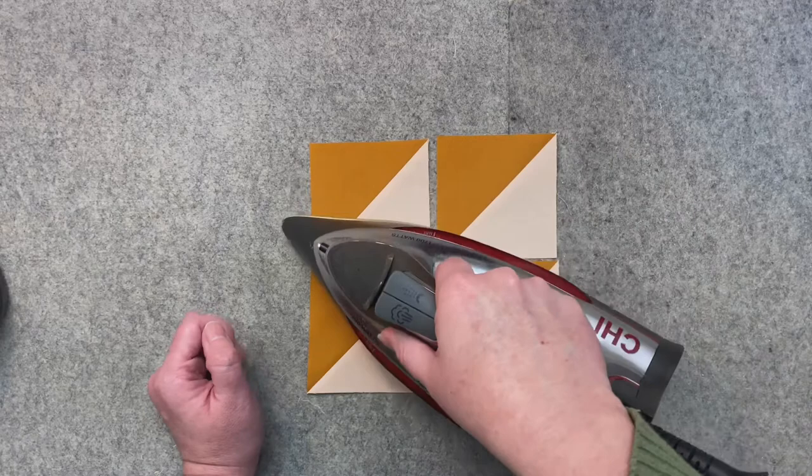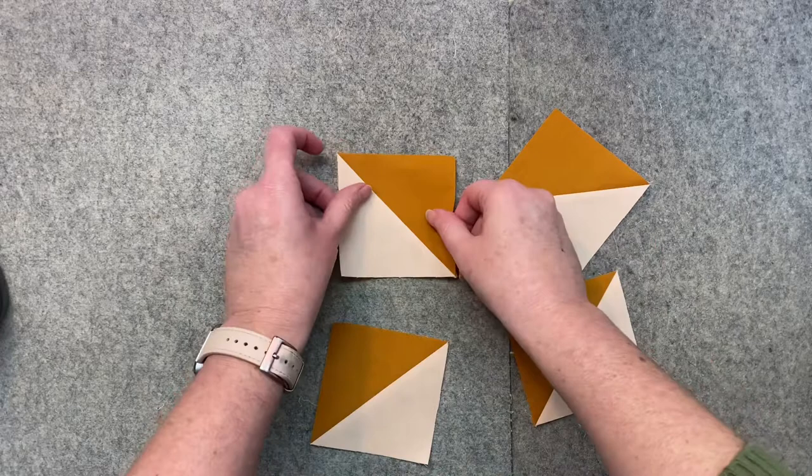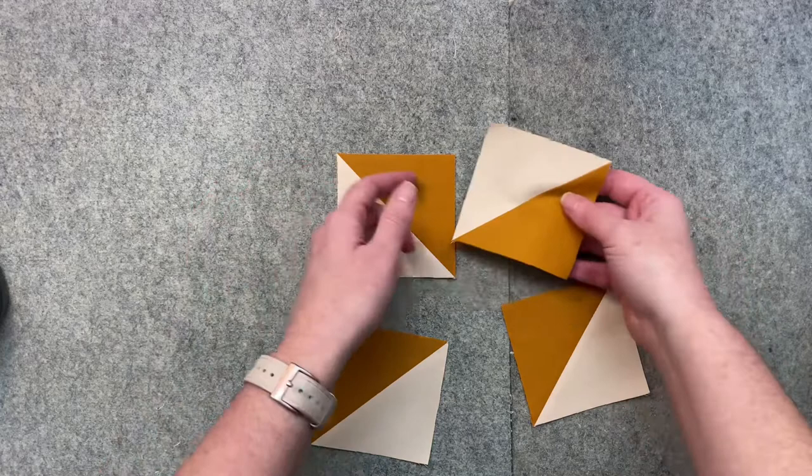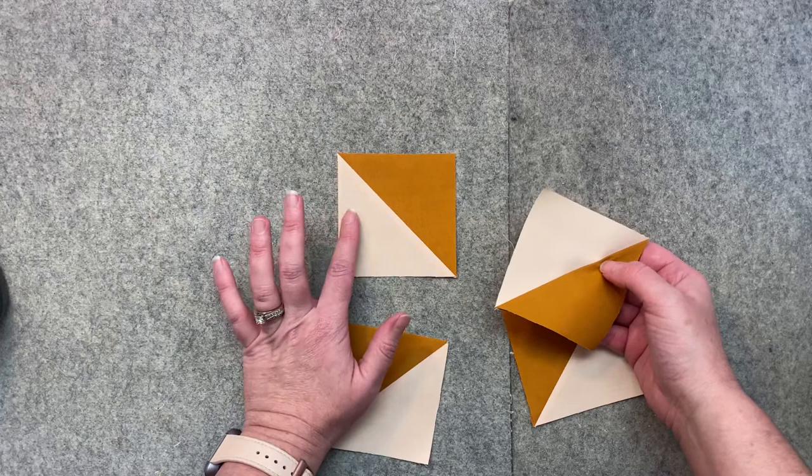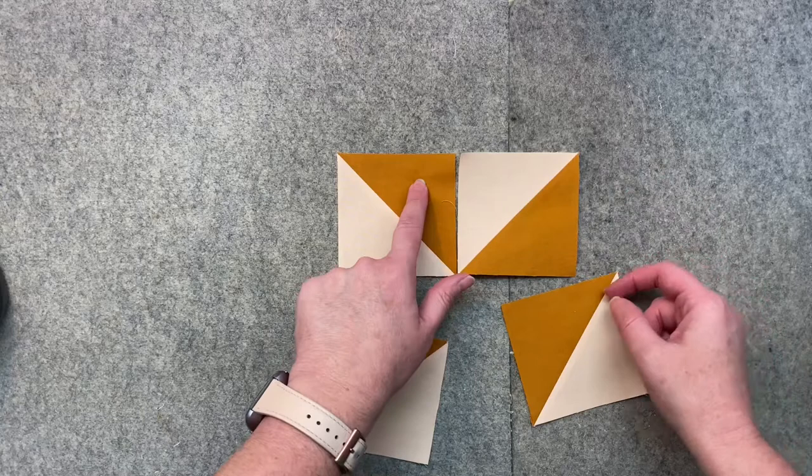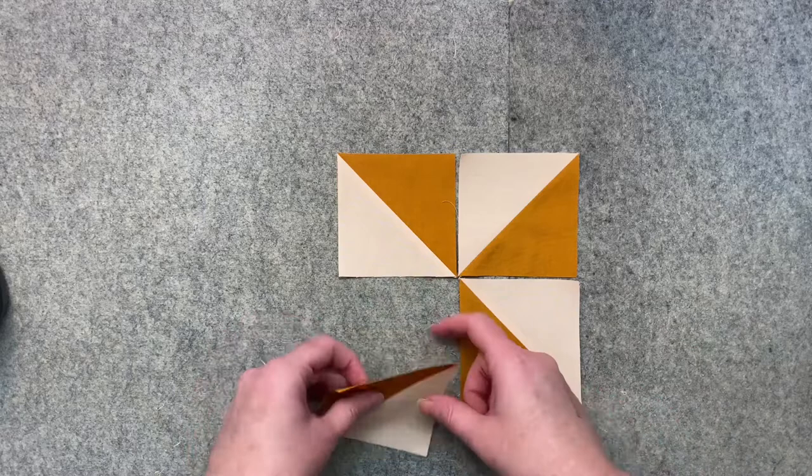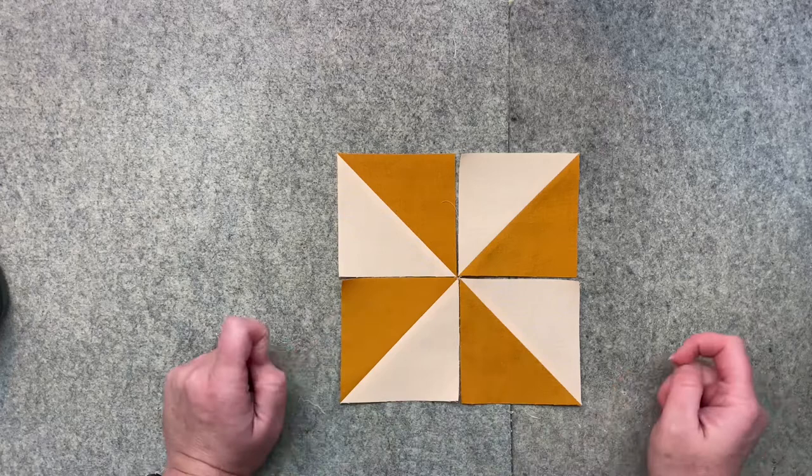So now that we've got our four half square triangles, we're going to put them together. Your pattern should tell you about how to do this. In some patterns it doesn't matter which color goes where, and in some patterns it does, so make sure you're reading your pattern. If I'm putting this color here, on the next block it goes here, on the next block it goes here, and then boom. So the color is boom, skip one, boom, skip one, boom, skip one, boom, if that makes sense.